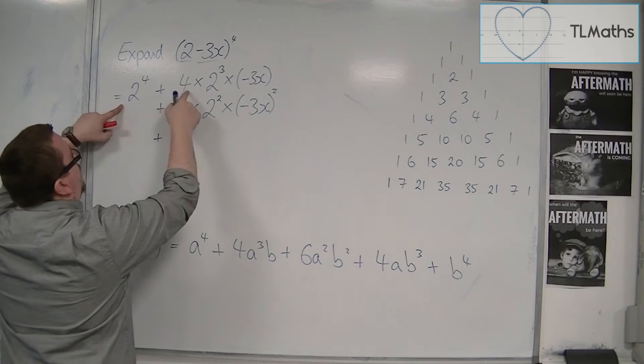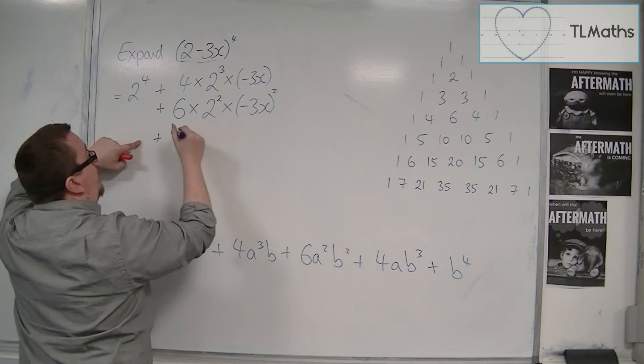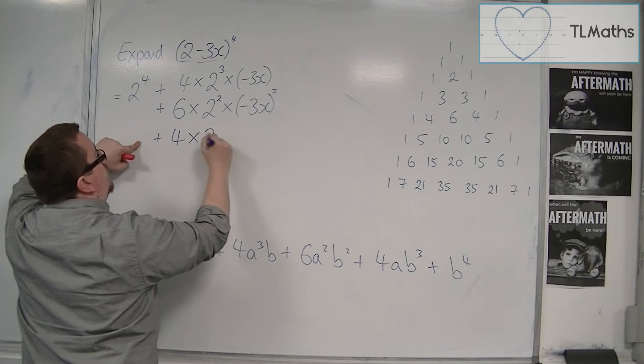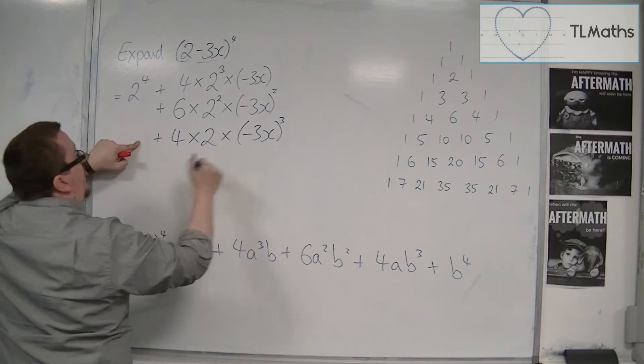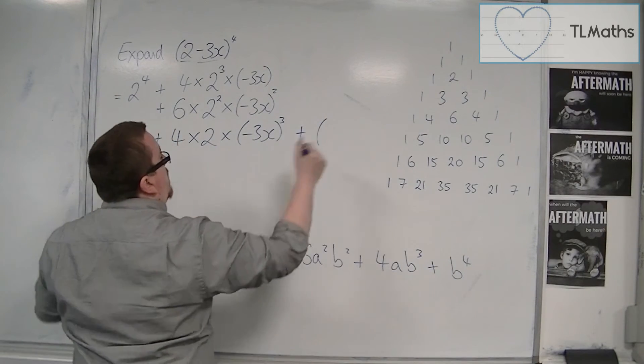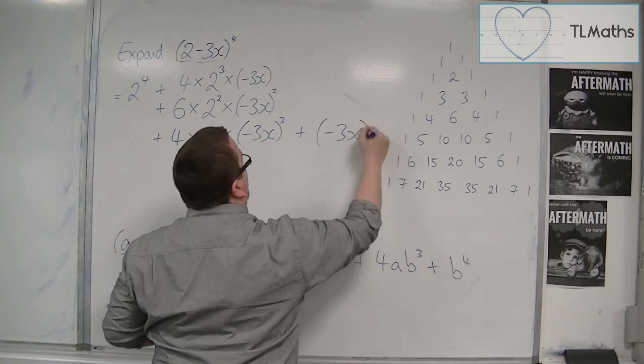So we've got 1, 4, 6, then 4, 2 reduces in power, and the minus 3x increases in power. And then finally, we have the minus 3x to the power of 4.